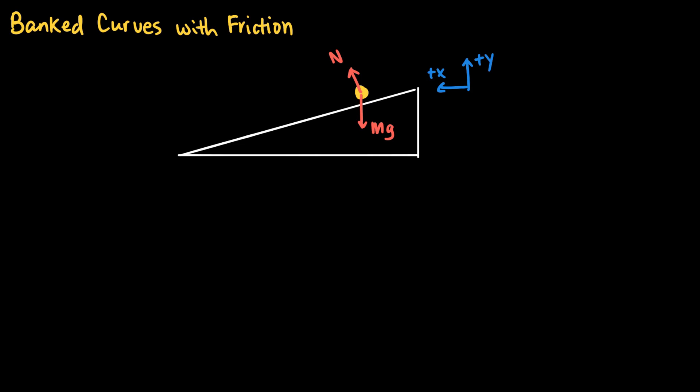Now let's consider a banked curve with friction, specifically the case where the speed is less than √(r·g·tan theta). If the car's speed is too slow relative to the prescribed frictionless speed, the car is going to want to slide down the bank. In that case, a static friction force points up the bank, opposing the tendency to slide down, and keeps the car safely on the road.